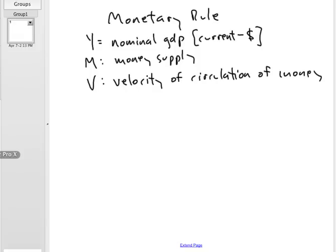Of money. So by definition, the velocity of circulation of money is nominal GDP divided by the money supply. The only way that, say, a hundred billion dollars of goods and services could be bought using a money supply of 20 billion...